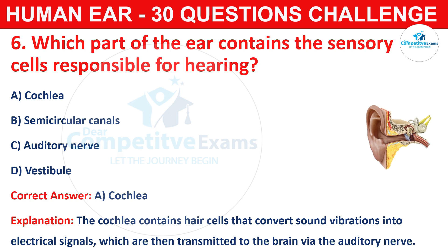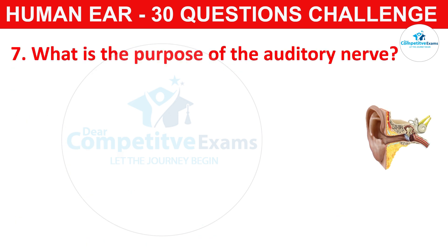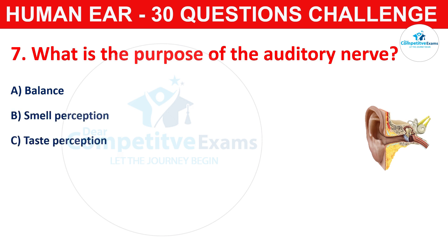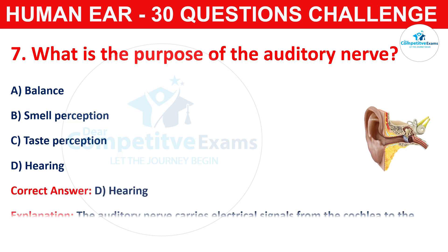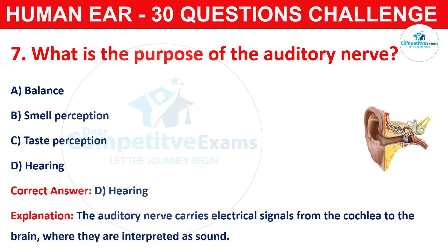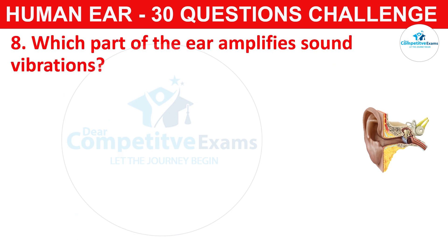Question number seven: what is the purpose of the auditory nerve? Your options are balance, smell perception, taste perception, or hearing. The correct answer is D, that is hearing. The auditory nerve carries electrical signals from the cochlea to the brain, where they are interpreted as sound.